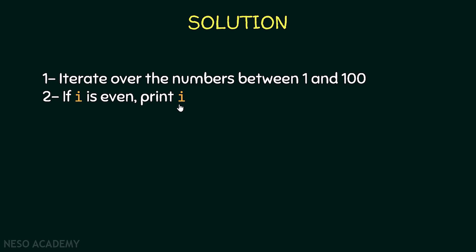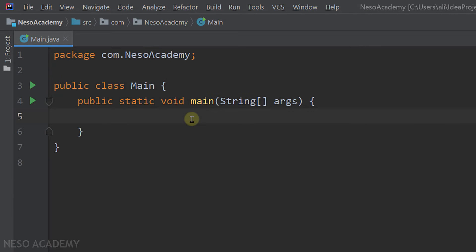If i is even, we print i. Since we start from 1 and end at 100, we print numbers in increasing order. To print in decreasing order, we start from 100 and end at 1, printing i each time if it is an even number. Now let's go to IntelliJ.